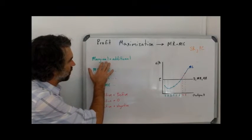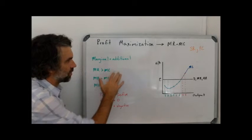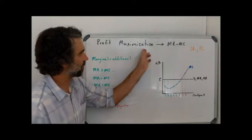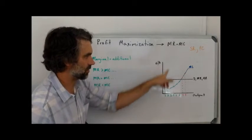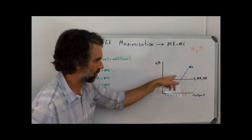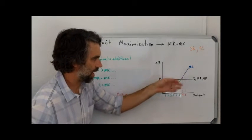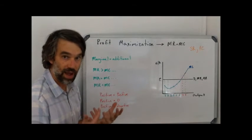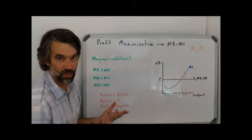So keep in mind that the word marginal means additional. We always find the point of profit maximization where the marginal revenue curve is intersected by the marginal cost curve. So here, where these two curves intersect, that point is the point where we find our quantity of profit maximization.